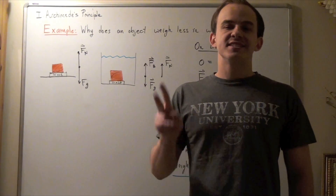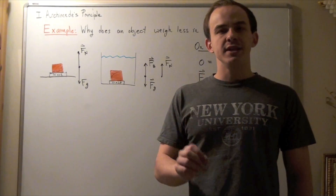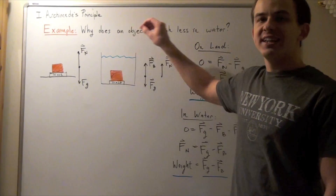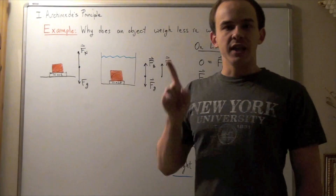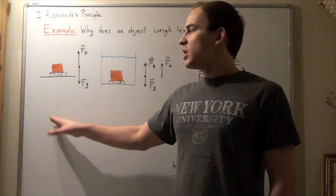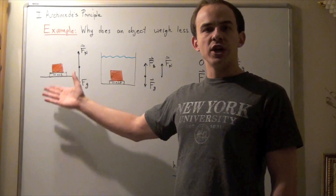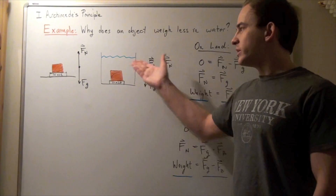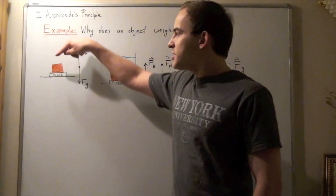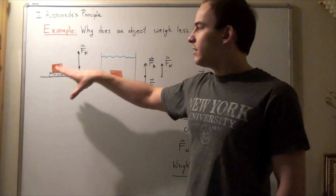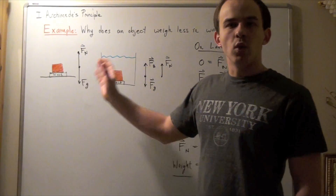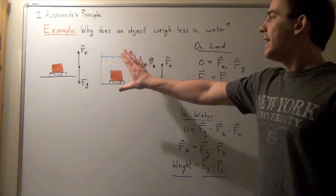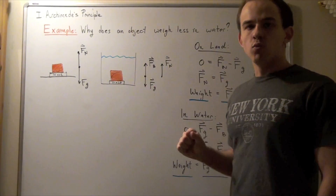Now I want to answer the second question using Archimedes' Principle: why does an object weigh less in water than on land? Let's draw the diagram for the object on land and the diagram for the object in fluid. Let's place our object on a scale on land and compare that weight to the weight of the object on the same scale in water.